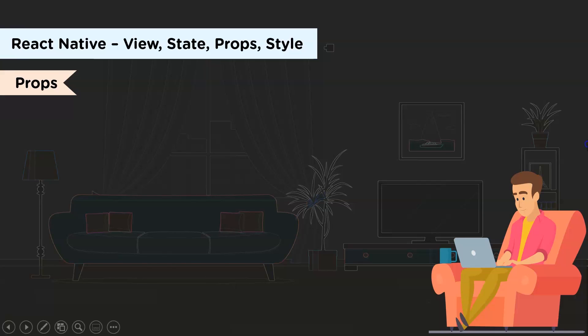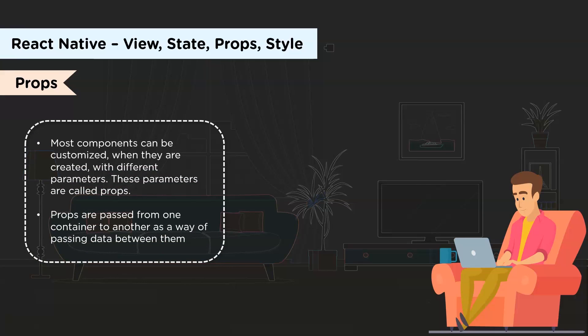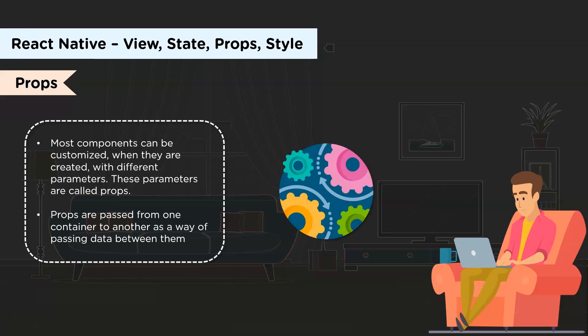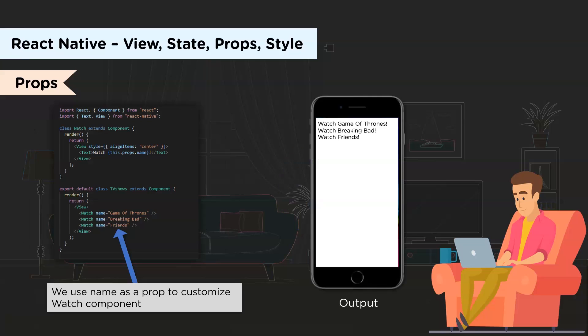Moving on, let's look at props. Most components can be customized when created with different parameters. These parameters are called props, short for properties. Props are passed from one container to another as a way of passing data between them. Here, using the name as a prop lets us customize the message in the component, so we can reuse our component for each of our TV shows. This is how we can use props in our component.